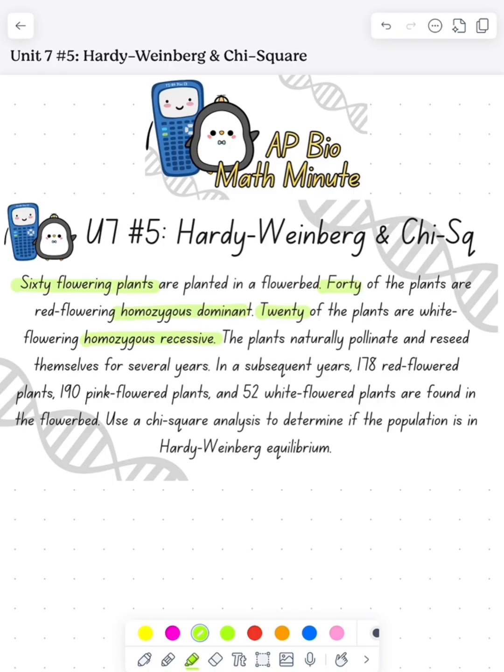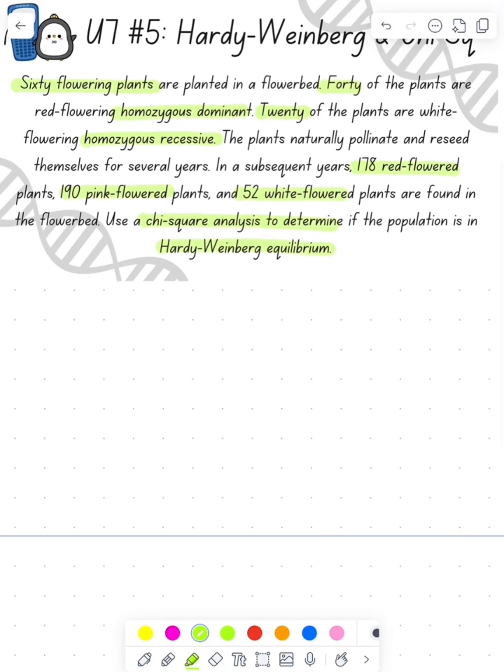There are 40 individuals that are homozygous dominant, 20 that are homozygous recessive, and in a future generation there's 178 that are red, 190 that are pink, and 52 that are white. I need to do a chi-square analysis to figure out if the population is still in Hardy-Weinberg.